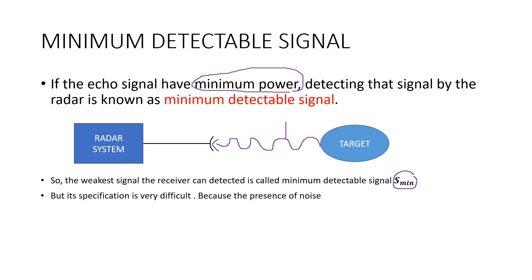Now, the specification or identification of the minimum detectable signal is very difficult because of the presence of noise. The ability of a radar receiver to detect a weak echo signal is limited by the noise energy occupying the portion of the frequency spectrum which is also occupied by the signal energy. Due to noise coming along with the signals, it is very difficult to specify a minimum detectable signal.